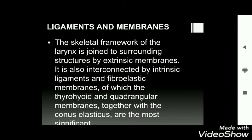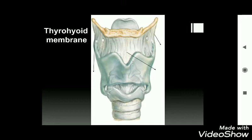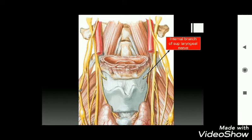The skeletal framework of the larynx is joined to surrounding structures by extrinsic membranes and interconnected by intrinsic ligaments and fibroelastic membranes. The most significant of these are the thyrohyoid membrane, quadrangular membrane, and conus elasticus. The thyrohyoid membrane attaches to the superior border of the thyroid laminae and extends upwards to reach the hyoid bone.